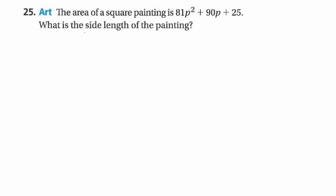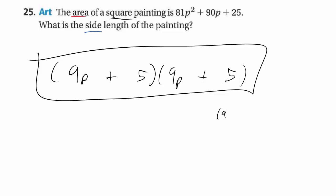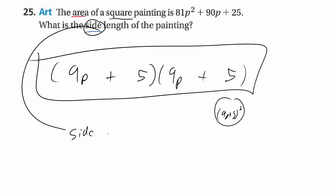For number 25, we're asked to find the side length, but we're given the area. The clue is that it's a square painting, which means length and width have to be the same. So if we factor this, we know it's going to be a perfect square. The square root of 81 is 9. So for the sides we have 9 and 9, and p and p, and 5 and 5 — the middle term works out. 9 times 5 is 45p, and another 45p — that's where the 90p comes from. We can write 9p plus 5 squared. But they want just one side, so the answer is 9p plus 5.